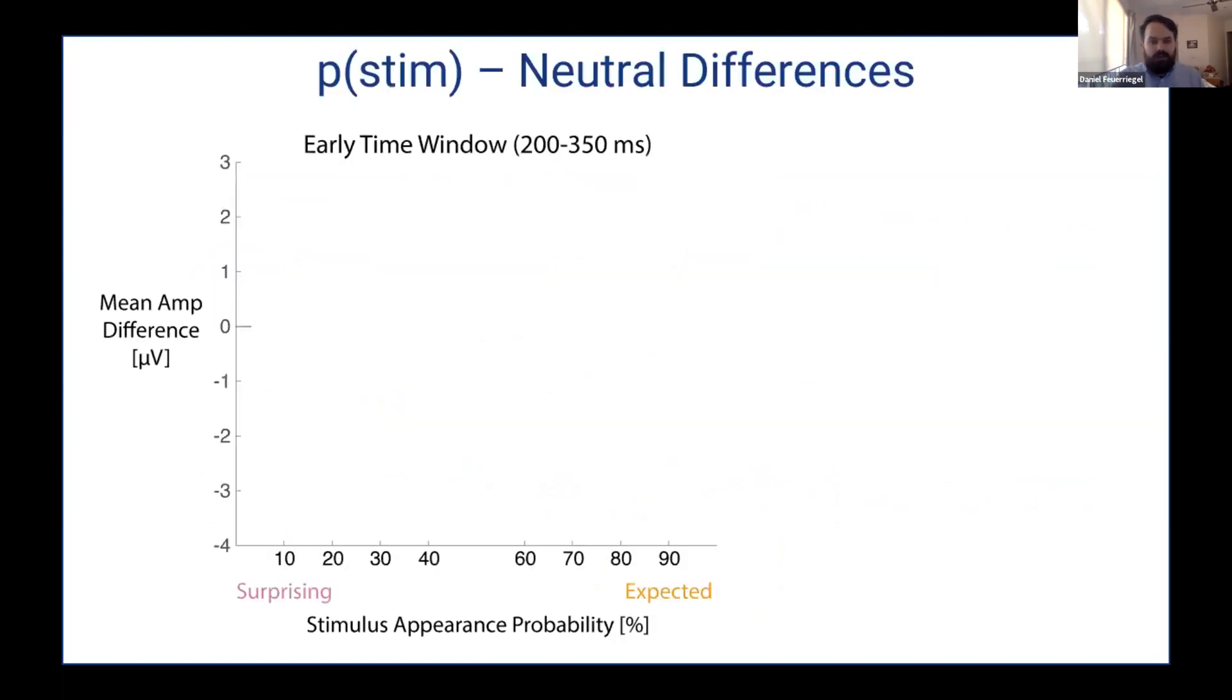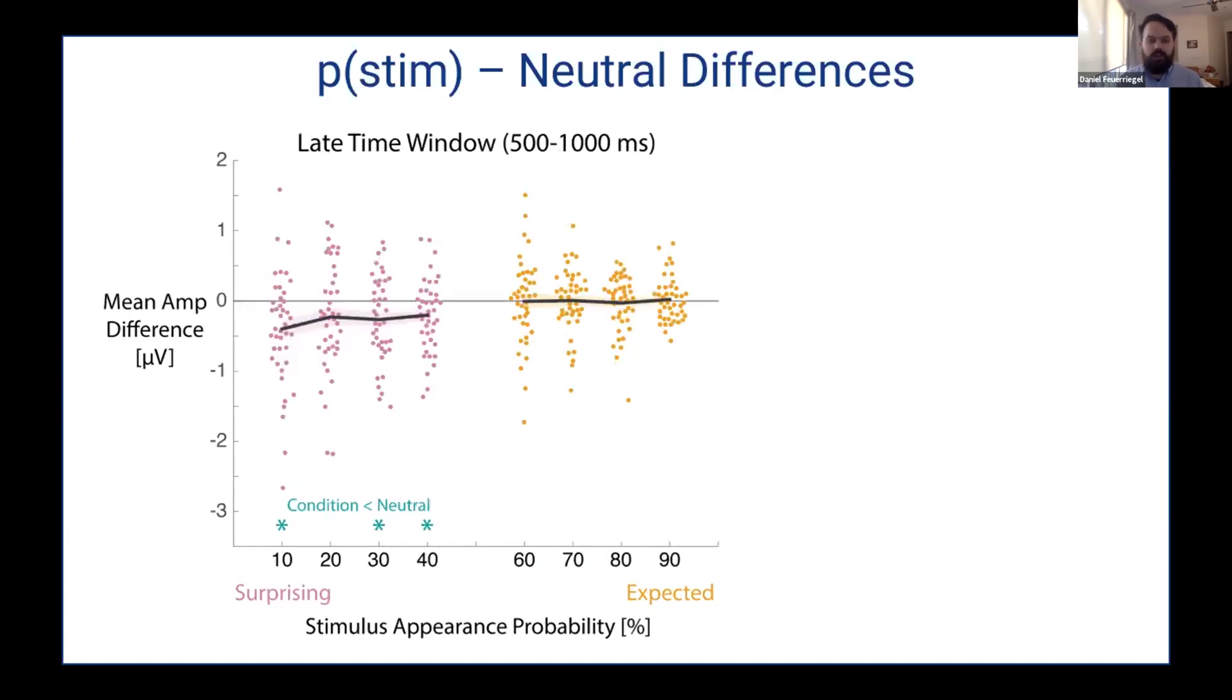Okay. So we then got a region of interest averaged mean amplitudes. So to orient you again, here we have the individual probability conditions at the bottom and then the amplitude difference to the neutral condition as the y-axis. So these are all compared to the 50-50 condition here. And what we found was that surprising stimuli evoked more negative going ERPs across these conditions compared to the neutral condition. Whereas we didn't really find this for expected stimuli. So if anything, the 60% was slightly more negative and for the others, the Bayes factors indicated evidence preferring the null. And this was also found for the later time window and almost sort of this came out a bit more clearly even here.